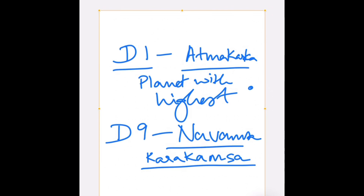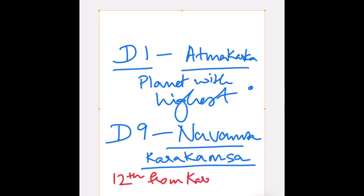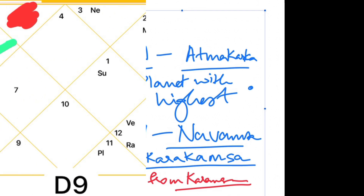Step 2 is to see where your Atmakarat is sitting in the D9 chart, which is your Navamsa chart. Wherever that planet sits in the D9 chart, that is your Karkamsa. And how to find your Isht Devta is to look at the 12th sign or planet from the Karkamsa.